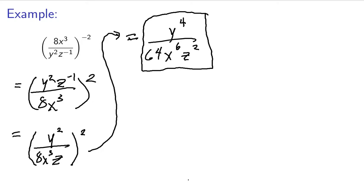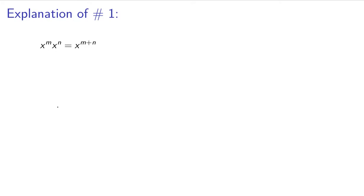Now I'm going to go ahead and do the selected explanations. Explanation of number 1: x to the m times x to the n equals x to the m plus n. This is actually sometimes called the exponential law, and it's the basis of all of the other exponent rules. You can actually derive everything else from this one rule.